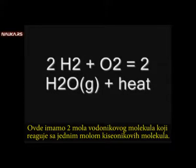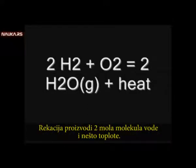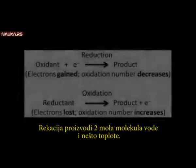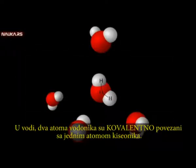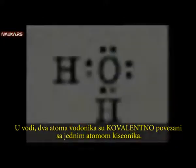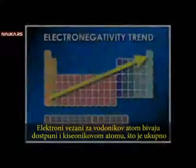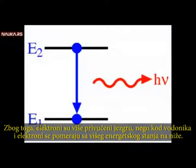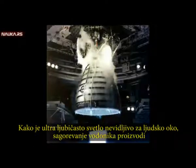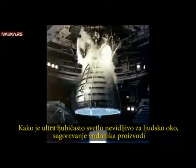Let's take a look at a simple redox reaction. Here we have two moles of hydrogen molecules reacting with one mole of oxygen. This produces two moles of water molecules and some heat. Oxygen is being reduced while hydrogen is being oxidized. In water, two hydrogen atoms are covalently bonded to a single oxygen atom. The electrons bound to the hydrogen atoms are shared with the oxygen atom, which is far more electronegative than the hydrogen atoms, so it pulls the electrons closer to its nucleus. As a result, the electrons move from a high energy state to a low energy state and release ultraviolet photons. Since ultraviolet light is invisible to the human eye, burning hydrogen produces only a very faint flame that glows due to black body radiation.